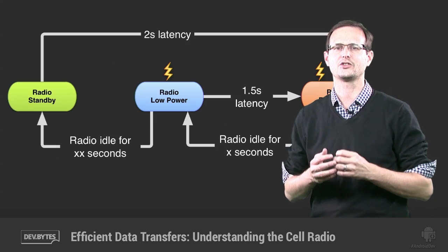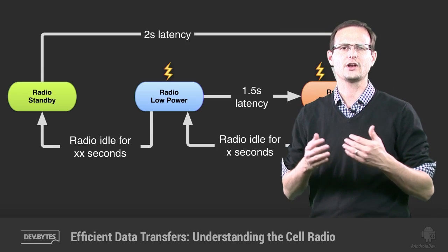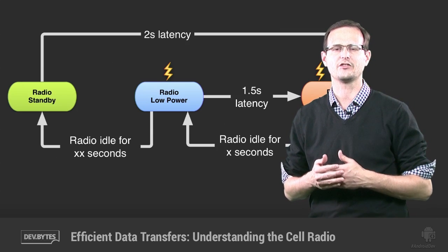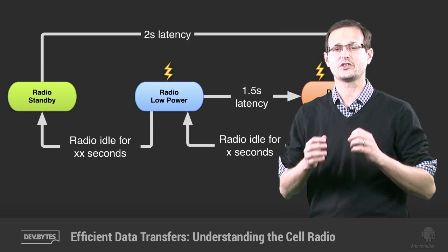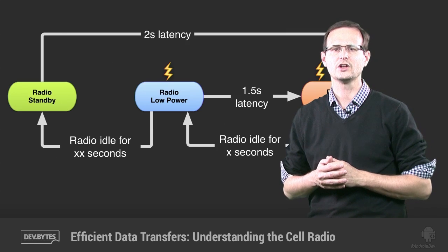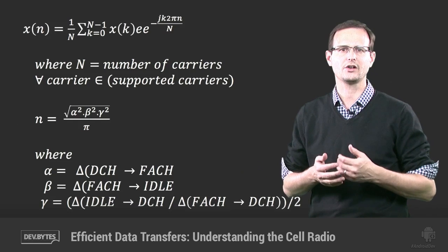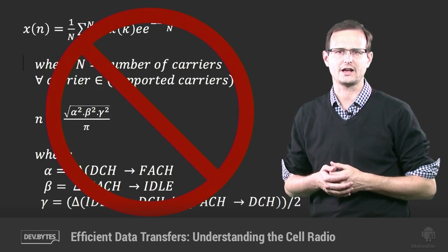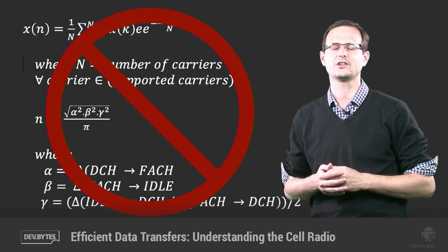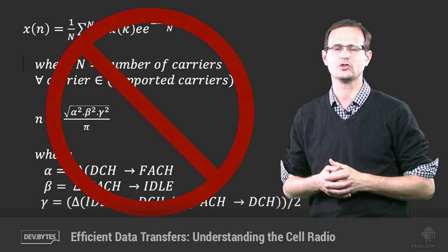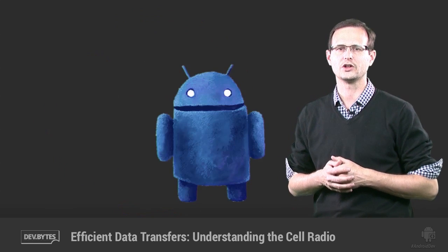The exact latencies and tail times vary between carriers, or even within carriers depending on where they are, as carriers try to balance low latency with longer battery life based on things like cell congestion and typical network conditions. To understand how this might affect your app design choices, you start with this simple equation, then take the square root of the sum of the latency and idle times between each state — and then throw all of that out. Because it really doesn't require any maths, and it doesn't even matter what the specific latency or tail times are for any users of your app.